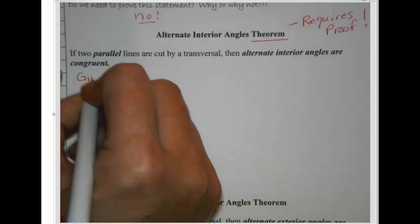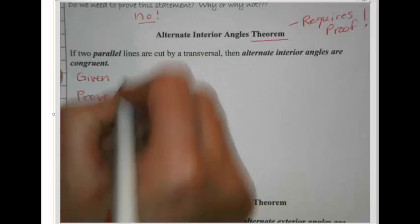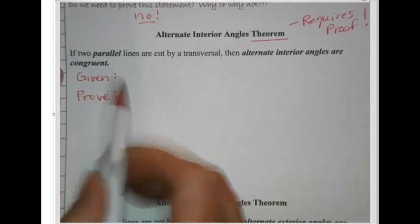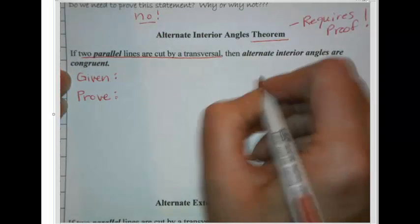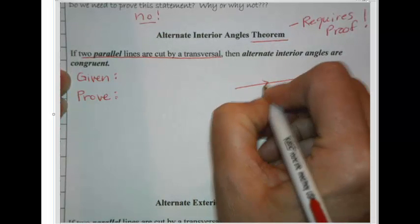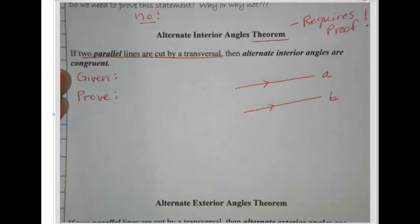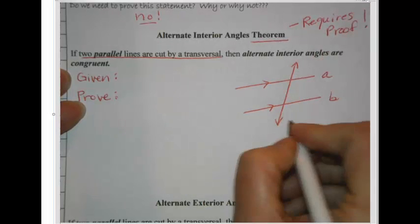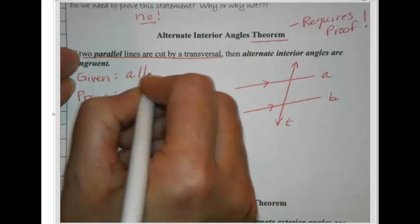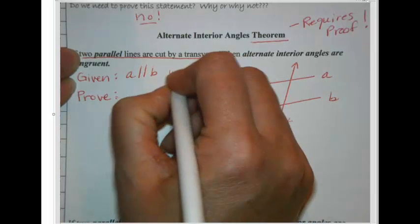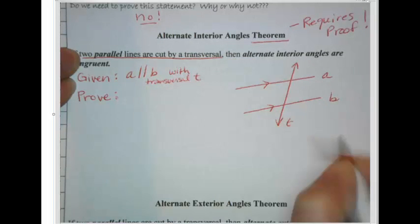A proof has a given statement and a prove goal, and we're going to have a diagram as well. We want to draw a diagram of our hypothesis. Our two parallel lines are cut by a transversal, and that's also our given statement. Let's draw two parallel lines, mark them with arrows, and give them names — line A and line B — and then draw a transversal line T. So our given is: line A is parallel to line B with transversal T, and our picture shows that.